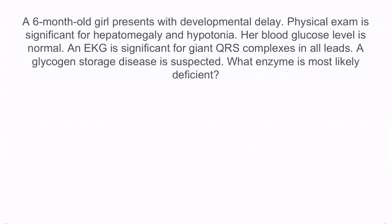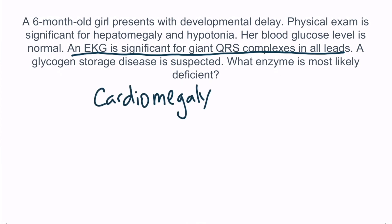Let's do a question. A six-month-old girl presents with developmental delay. Physical exam is significant for hepatomegaly and hypotonia. Her blood glucose level is normal. An EKG is significant for giant QRS complexes in all leads. A glycogen storage disease is suspected. What enzyme is most likely deficient? The most important part of this question is the EKG finding. From physiology, you should know that the QRS complex represents ventricular depolarization. A larger voltage represents larger ventricles — in other words, this patient has cardiomegaly. The only glycogen storage disease that affects the heart is Pompe disease, or glycogen storage disease type 2, which is caused by a deficiency of alpha-1,4 glucosidase.